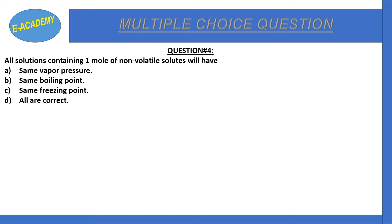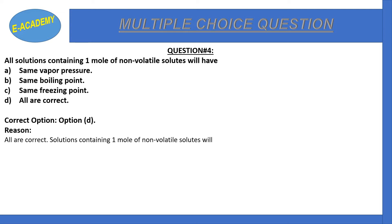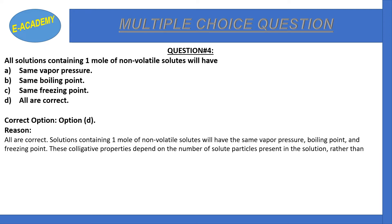When 1 mol of non-volatile solute is dissolved, the freezing point, boiling point, and vapor pressure will all be the same. Solution containing 1 mol of non-volatile solute will have the same vapor pressure, boiling point, and freezing point. These colligative properties depend on the number of solute particles present in the solution.